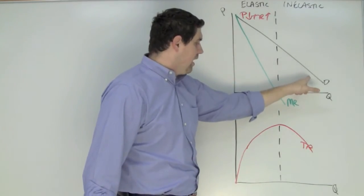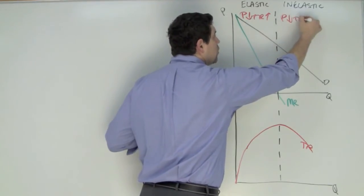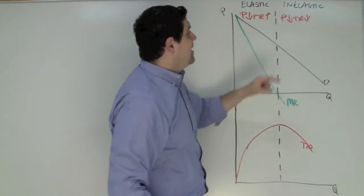In this situation the price is falling and the total revenue is falling. If the price is going down and the total revenue is going down then that must be the inelastic range.